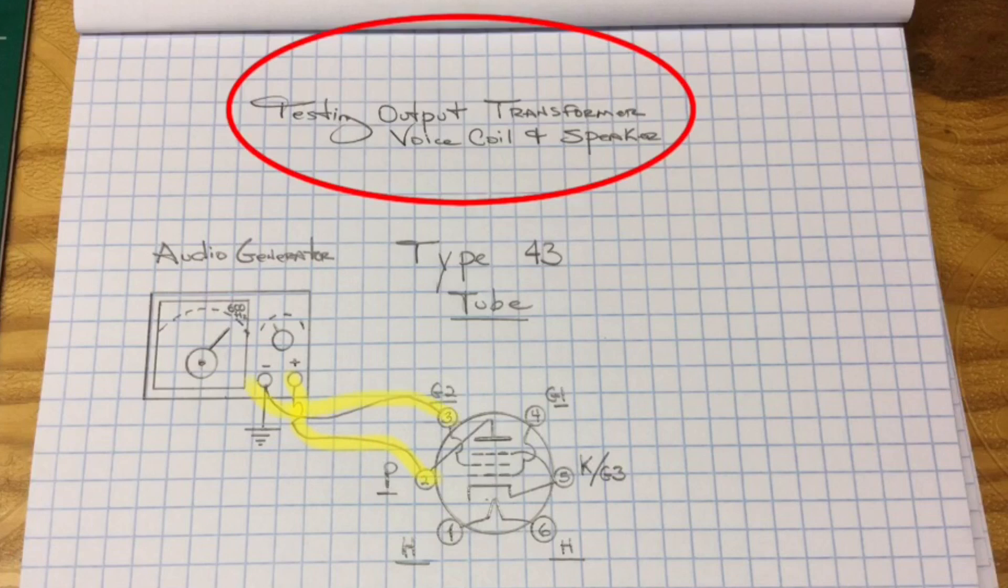And then we'll be taking the negative lead, and I'll attach it to pin number three, which is grid two. So let's take a look at that in reality and see what that looks like now using the radio itself.